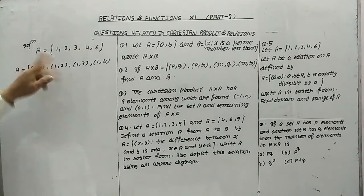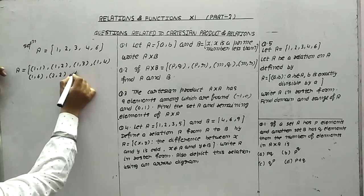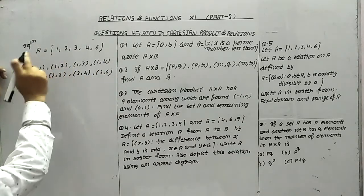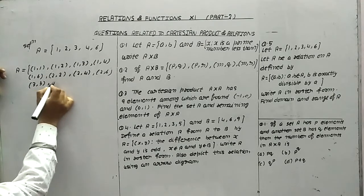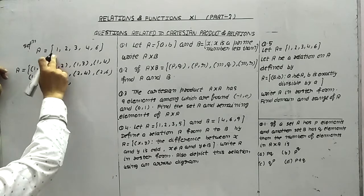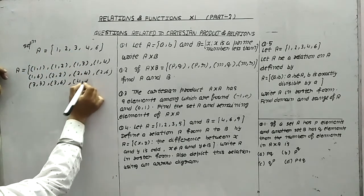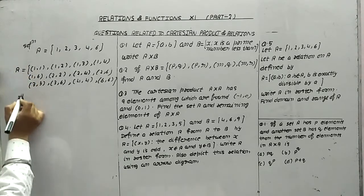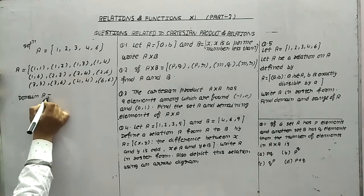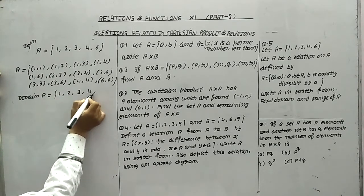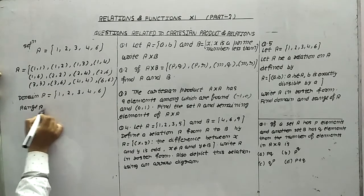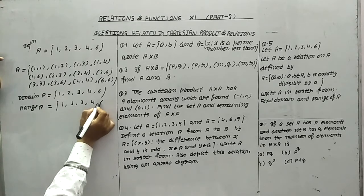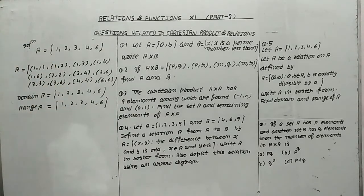Continuing with a=4: (4,4) only — (4,1),(4,2),(4,3) are not divisible. Then with a=6: (6,6). So R = {(1,1),(1,2),(1,3),(1,4),(1,6),(2,2),(2,4),(2,6),(3,3),(3,6),(4,4),(6,6)}. Now we write the domain of R, which is {1, 2, 3, 4, 6}, and the range of R, checking second elements, which is also {1, 2, 3, 4, 6}. So the domain and range are the same in this case.